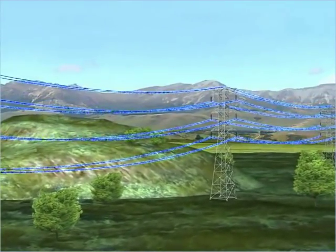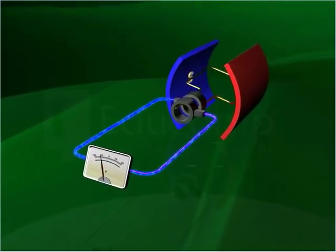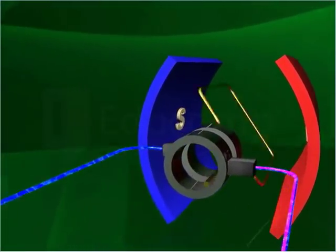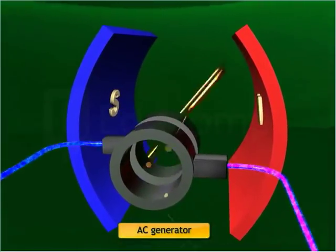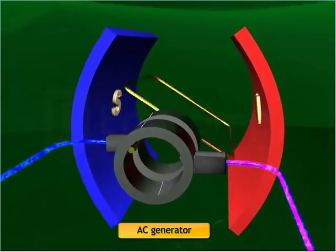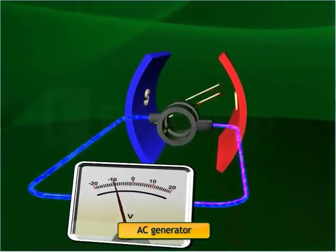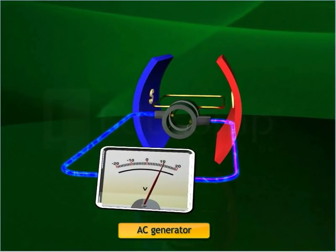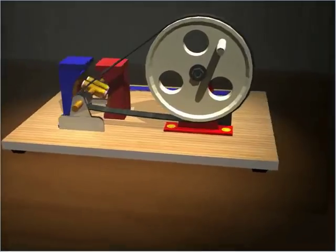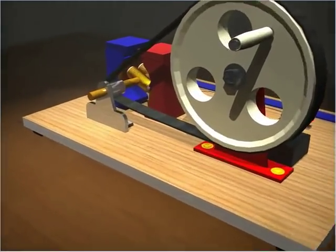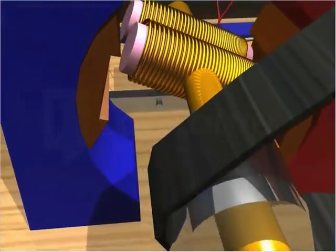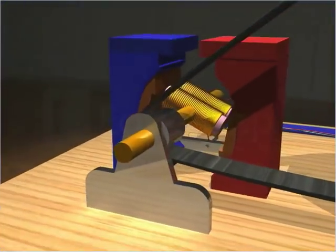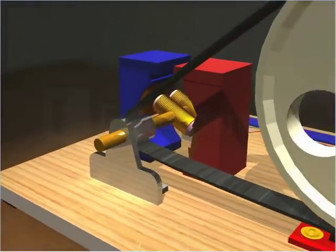Electricity can be generated by way of an alternating current generator, simply called an AC generator. It is an electromagnetic device that transforms mechanical energy into electrical energy. This is how a simple AC generator looks like — a rectangular coil sits between the two poles of a permanent magnet, and the coil is mounted on an axle.